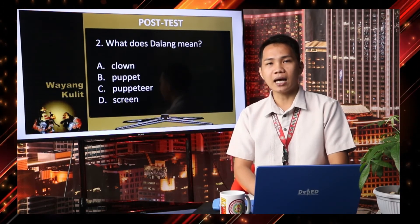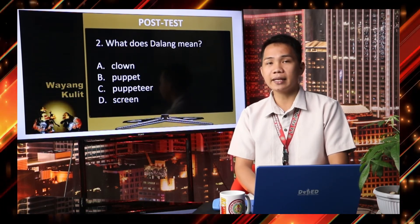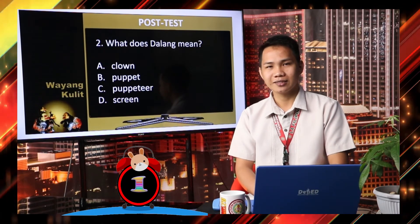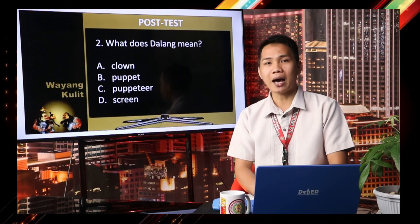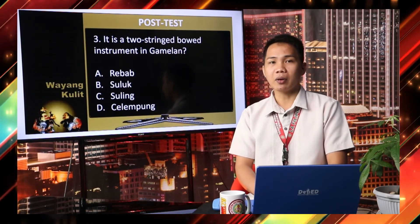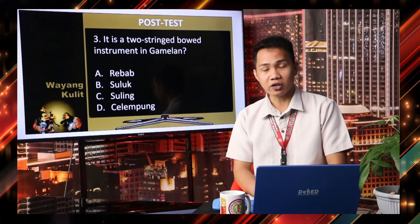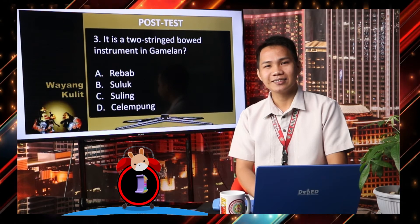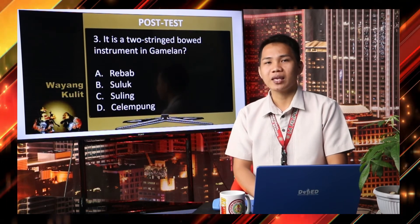Next: What does Dalang mean? Letter A, Clown. Letter B, Puppet. Letter C, Puppeteer. Letter D, Screen. Your five seconds starts now. The correct answer is Letter C, the Puppeteer. Number three: it is a two-string bowed instrument in the gamelan. Letter A, Rebob. Letter B, Suluk. Letter C, Suling. Letter D, Salampong. Your five seconds starts now. Time is up. The correct answer is Letter A, Rebob.